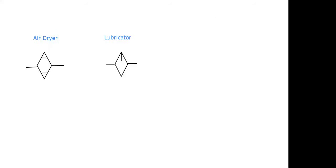Now we are going to see another symbol — FRL. The full form of FRL is Filter, Regulator, and Lubricator. It is the complete assembly of these three parts: filter, regulator, and lubricator.